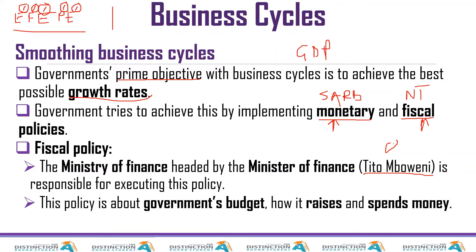This policy is about government's budget. I'm doing this video in January, and there are debates going on about whether Tito Mboweni should increase tax rates so that we can afford the COVID vaccine. Some economists argue that they should and some argue that they shouldn't. You can have a look at what the media companies are saying in as far as that is concerned.